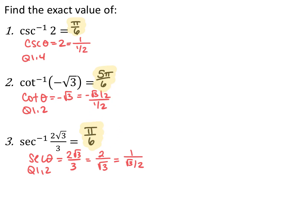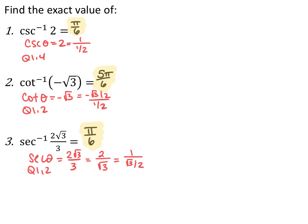For the last one, secant inverse of two root three over three means where in quadrants one or two does secant equal two root three over three. If I unrationalize that, I get two over root three, which is the same as one over (root three over two), because secant is r over x and r is one on the unit circle. So where is our x-coordinate root three over two? At pi over six. These secant ones are a bit more tricky because you have to work backwards and unsimplify.